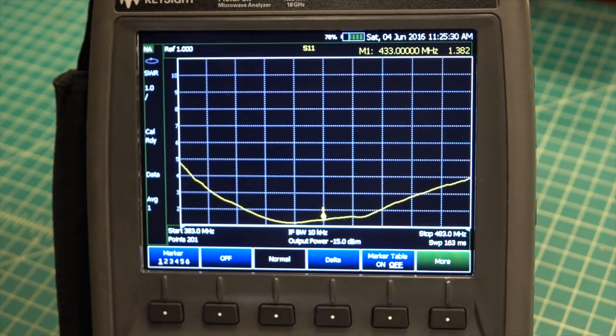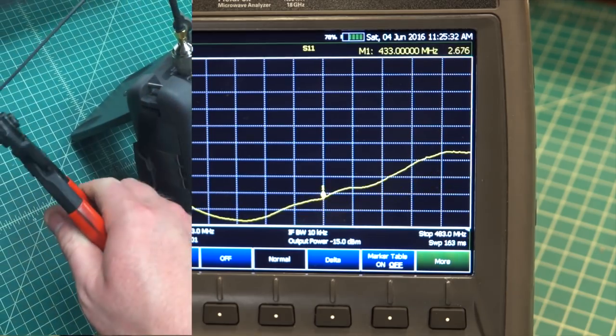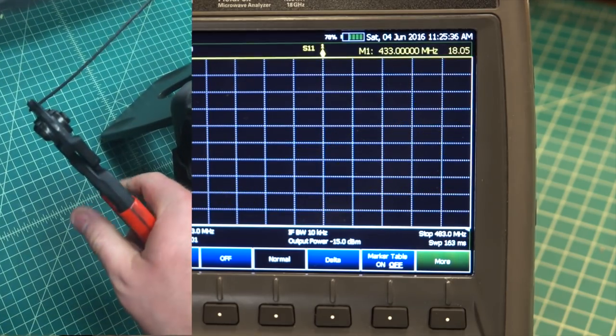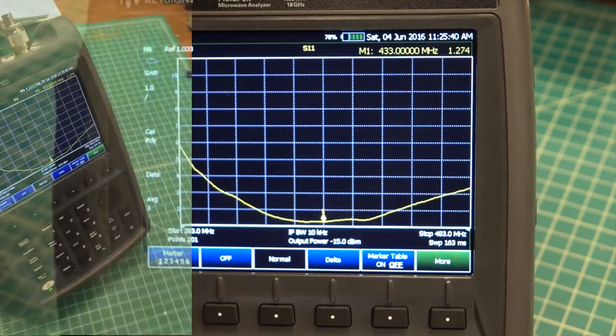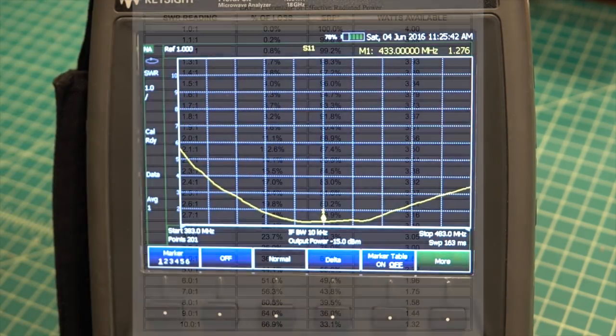This 433 MHz dipole antenna is already a pretty good match but here you can see by trimming it just a bit we can improve the SWR from about 1.4 to about 1.3 which only equates to a 1% increase in efficiency.